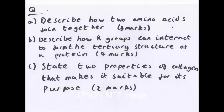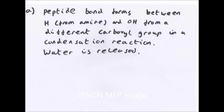Now, the exciting part of the video, the questions. These will be from past exam papers and I'll give you the answers in time to think about them. Question A: Describe how two amino acids join together, three marks. B: Describe how R groups can interact to form the tertiary structure of a protein. And C: State two properties of collagen that makes it suitable for its purpose, for example if it was in skin. I'll give you a chance to pause.